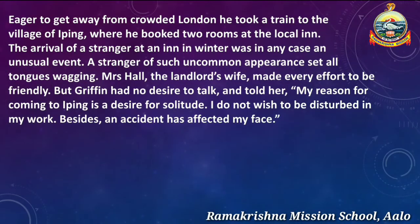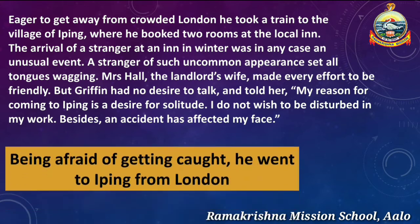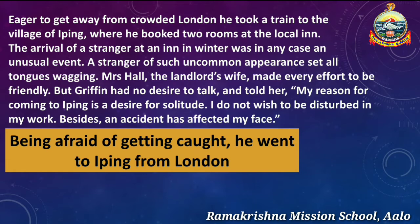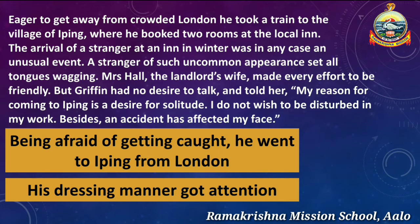Eager to get away from the crowded London, he took a train to the village of Iping, where he booked two rooms at a local inn. The arrival of a stranger in winter was in any case an unusual event, and a stranger of such uncommon appearance set all tongues wagging. Mrs. Hall, the landlord's wife, made every effort to be friendly. But Griffin had no desire to talk and told her, 'My reason for coming to Iping is a desire for solitude. I don't wish to be disturbed in my work. Besides, an accident has affected my face.'